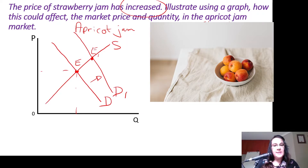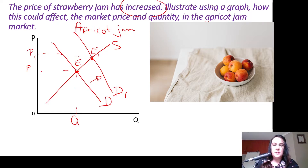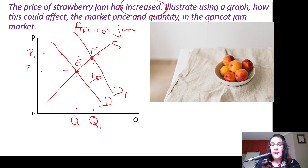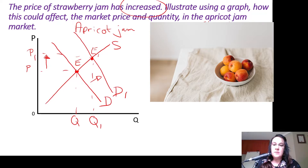Now we can see that if this was my original price and this was my original quantity, I now have to put a new set of dotted lines in here to illustrate my new price and quantity — that's Q1 over here and P1 over there. You have to show your little arrows and the detail on your graph work, otherwise you're going to lose marks. And that results in my quantity increasing from Q to Q1. That's our first example done.